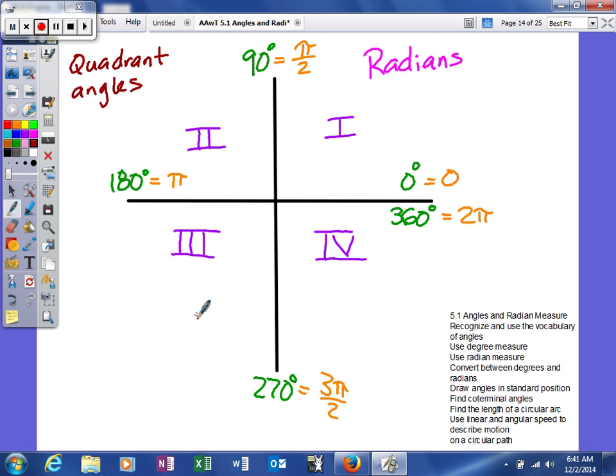And then lastly, in quadrant four, it'd be between 270 degrees and 360, or between one and a half π and 2π. So this right here, this would be one and 3/4 of π. And anything less than that would fall in between here. Anything more than that would fall between one and 3/4 and two whole. So just a decent idea of quadrant and radian measure.